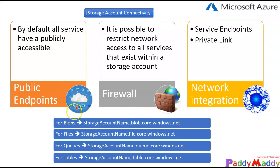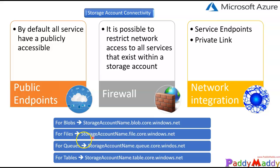Now let's understand the storage account components. We talked about blobs, files, queues, and tables. By default, if you haven't registered your storage account with a custom domain like xyz.com using a CNAME record, you get default names. For blobs it's your storage account name dot blob dot core dot windows dot net, and for Azure Files it's storage account name dot file dot core dot windows dot net.